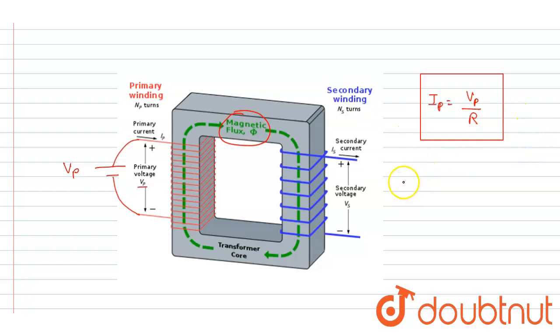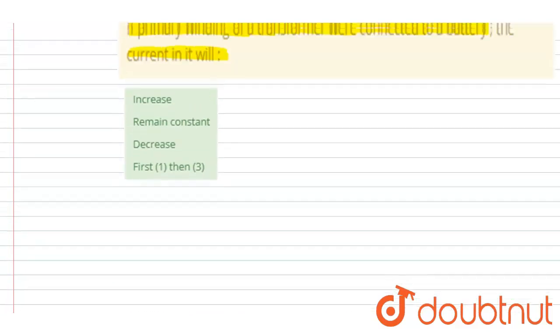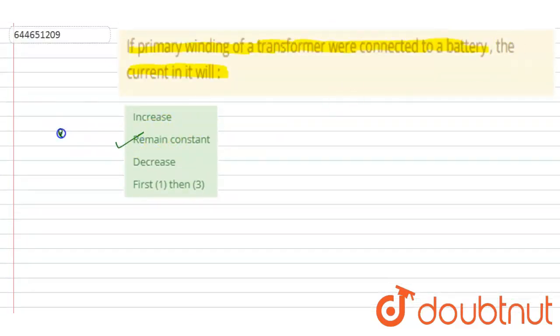Since Vp is constant, dΦ/dt will be zero. And if the flux is not changing, there will not be any induced current. So only this current Ip will remain constant. If you see here the option, it will remain constant, so B will be the correct answer. Thank you.